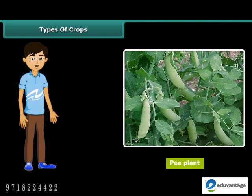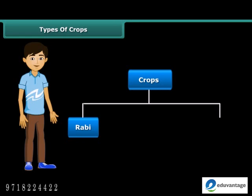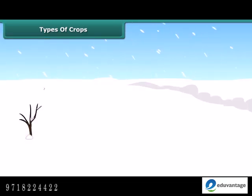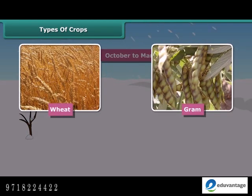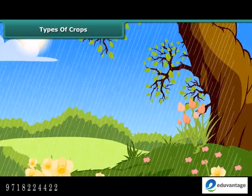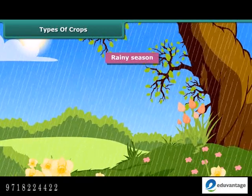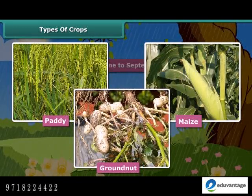If you wish to grow a pea plant in the hot season, you can't do it. In India, crops are broadly classified into two categories on the basis of the season they are grown in: Rabi crops and Kharif crops. Rabi crops are usually grown in the winter season from October to March. Wheat, gram and peas are examples of Rabi crops. Kharif crops are usually sown in the rainy season, generally from June to September. Paddy, maize, groundnut etc. are some common examples of Kharif crops.